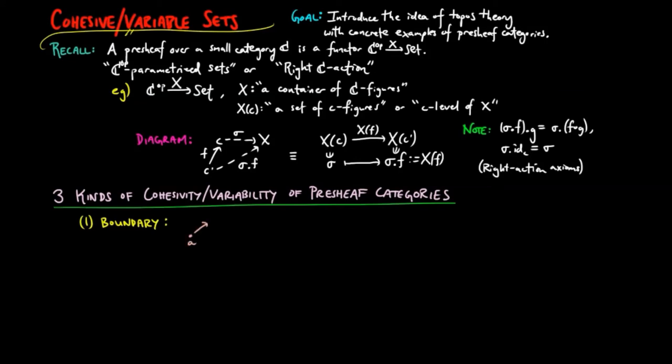For example, if we have an arc alpha from a vertex A to a vertex B in a graph, we have a source boundary which takes alpha to A. Similarly, if we have a triangle simplex, there is a boundary to an edge. This type of cohesivity is explored in combinatorics and cohomology theory.